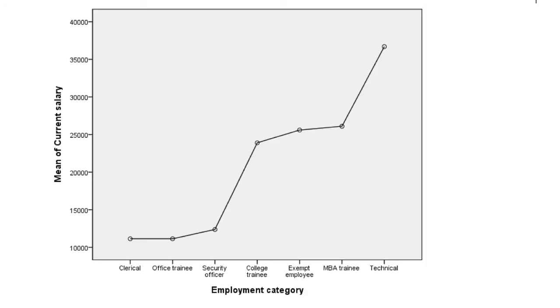And what's plotted on here is the means for these groups. So the mean clerical salary was, I said, about $11,000. It's down here. Same as office trainees, very similar to security officers. But you can see you then get a step upwards for the, what are they, the college trainees, the exempt employees and the MBA trainees.